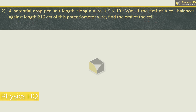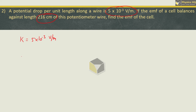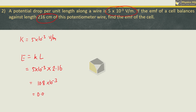A potential drop per unit length along a wire is 5 × 10⁻³ volt per meter. If the EMF of the cell balances against a length of 216 cm, find the EMF. EMF = K × L = 5 × 10⁻³ × 2.16 meter (since 216 cm = 2.16 m). This gives 10.8 × 10⁻³, which is 0.0108 volt. This is the EMF of the cell.